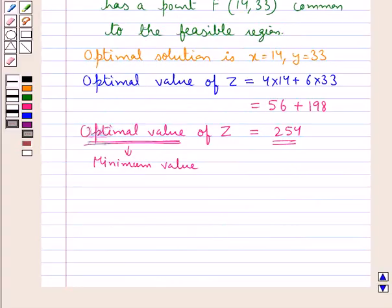So this is how we solve a linear programming problem using isocost method, and isocost method is used to minimize the cost.